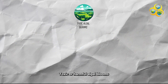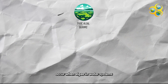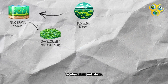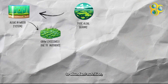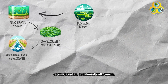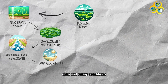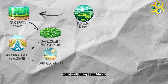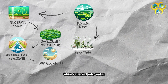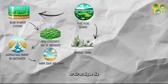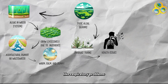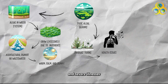Toxic or harmful algal blooms occur when algae in water systems grow excessively due to abundant nutrients, often from agricultural runoff or wastewater combined with warm, calm, and sunny conditions. Some algae produce toxins that, when released into the water or air as the algae die, can cause health issues like respiratory problems and severe illness.